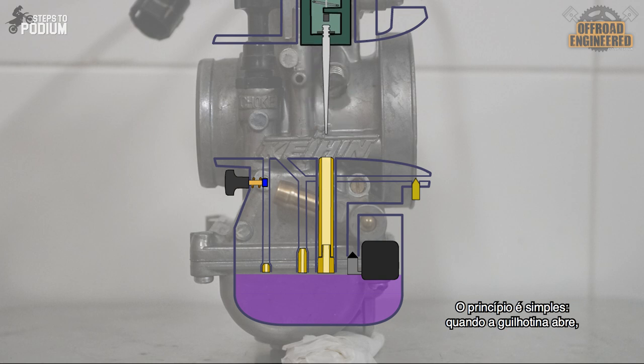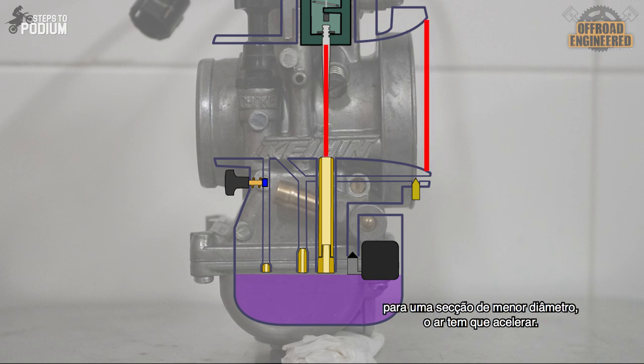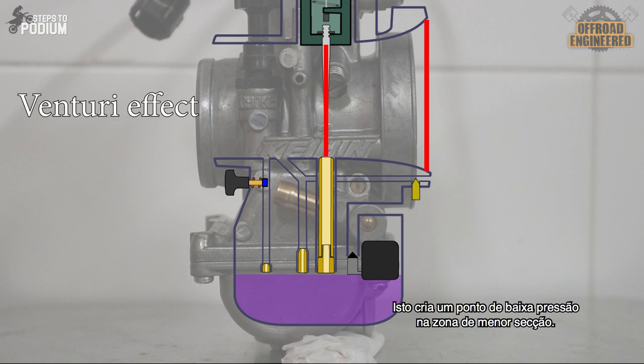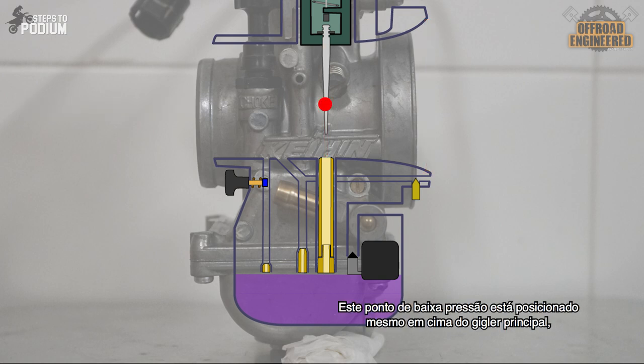The principle is simple. When the slide lifts, the engine sucks air through the throat. Since the air is flowing from a larger cross section to a smaller cross section, the air has to accelerate, which in turn reduces the pressure where the cross section is the smallest. This low pressure point is placed right on top of the main jet, which creates a vacuum and sucks fuel through this circuit.